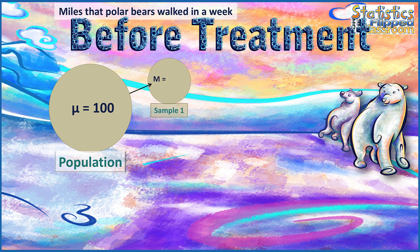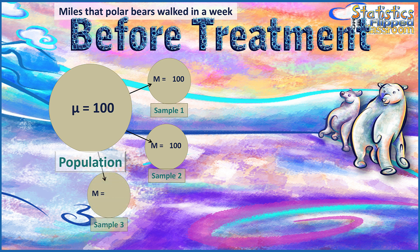We draw a first sample. Given that it's drawn from a population that walks 100 miles per week, how far would this sample walk in a week? The most likely outcome is 100 miles per week. A second sample? Our best guess is also 100 miles per week. A third sample? Any time we draw a sample from a population with a mean of 100, we expect the sample mean will also be 100.